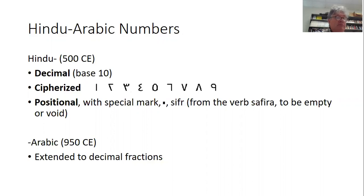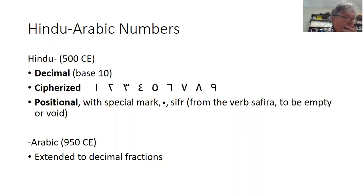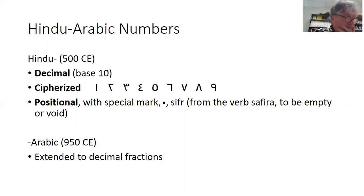Decimal just means base 10. For example, the number 123 is 3 plus 2 times 10 plus 1 times 10 squared, or a hundred. There are other bases used quite successfully. One we'll look at a lot is the sexagesimal system, which is base 60. That comes from Mesopotamia — it's why we have 60 minutes in an hour and 60 seconds in a minute, and it relates to degrees, minutes, and seconds.